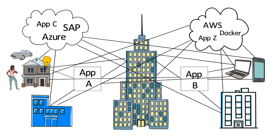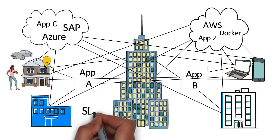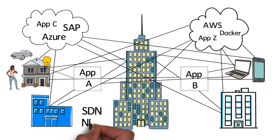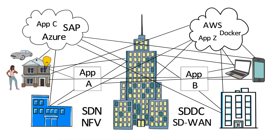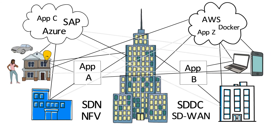You're left with a spider web of network connections to monitor and manage nowadays. And on top of all this, next-gen network technologies like SDN and NFV, software-defined data centers, and SD-WAN are adding even more complexity, making all those connections appear and disappear based on user demand, versus fixed communications like in the past.